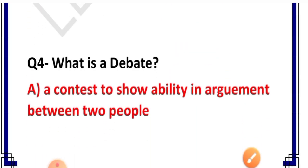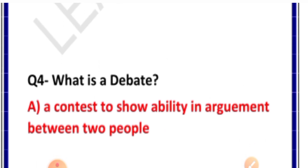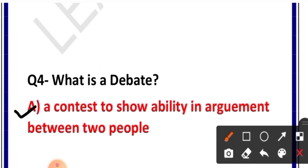Question number 4: What is a debate? Options: A. A contest to show ability in argument between two people, B. A contest to fight, C. A contest to prove better, D. None. Correct answer is option A — a contest to show ability in argument between two people. Do logon ke beech argument karne ki ability ki pratiyogita hoti hai, use hum kehte hain debate.